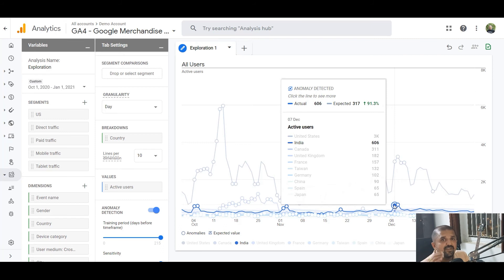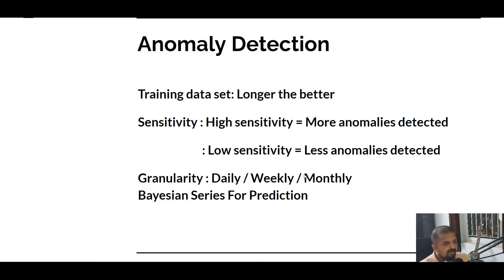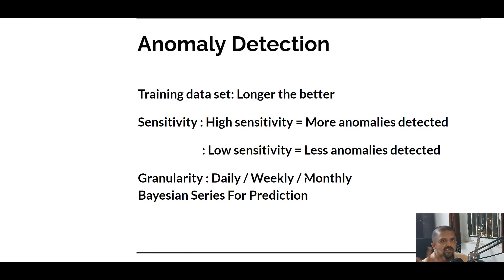To recap: the three variables available to set are training dataset — higher dataset means higher accuracy; sensitivity — higher sensitivity means more anomalies detected, lower means fewer; and granularity — daily, weekly, hourly, or monthly. The prediction of what is normal versus abnormal is done using something called Bayesian series prediction.